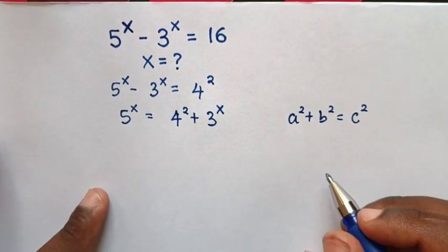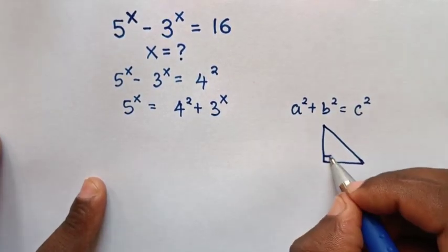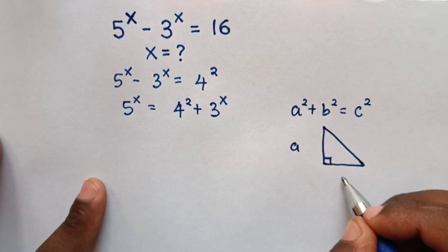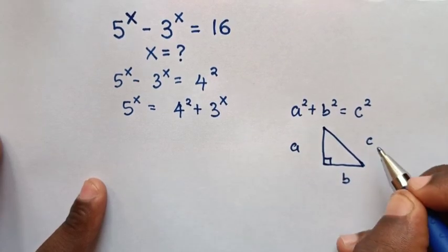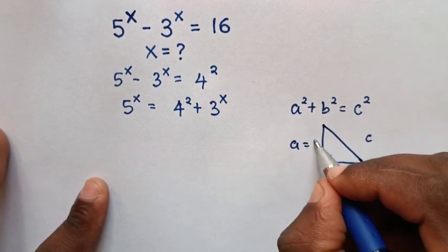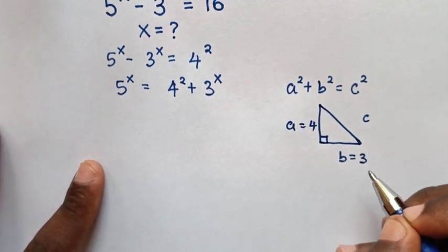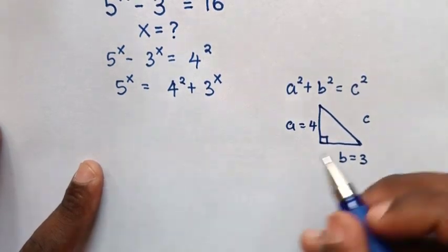From the Pythagoras theorem, we draw a right-angled triangle, where this is a, b, and this is c. From our equation, a is 4, b is 3, and c is 5.